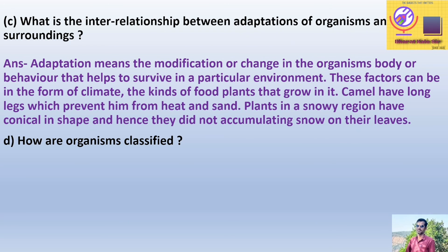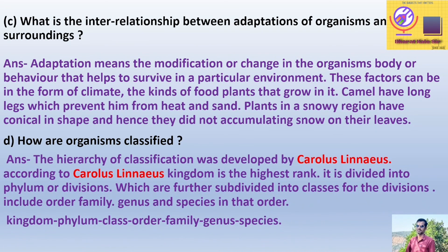Question: How are organisms classified? Answer: The hierarchy of classification was developed by Carolus Linnaeus. According to Carolus Linnaeus, kingdom is the highest rank. It is divided into phylum or division, which are further subdivided into classes. The divisions include order, family, genus, and species in that order. So, according to Carolus Linnaeus, the classification is as follows: Kingdom, Phylum, Class, Order, Family, Genus, and Species.